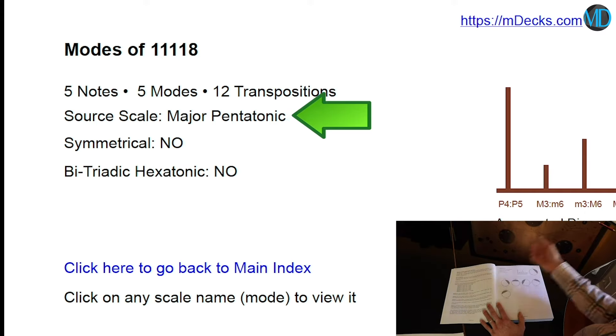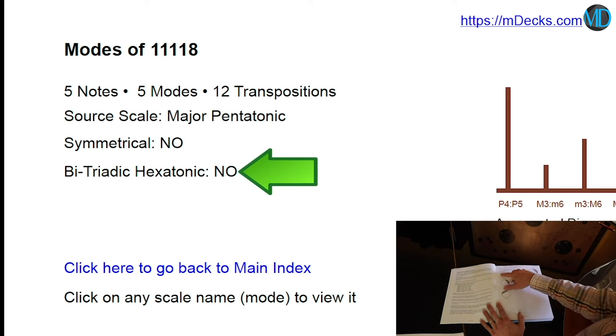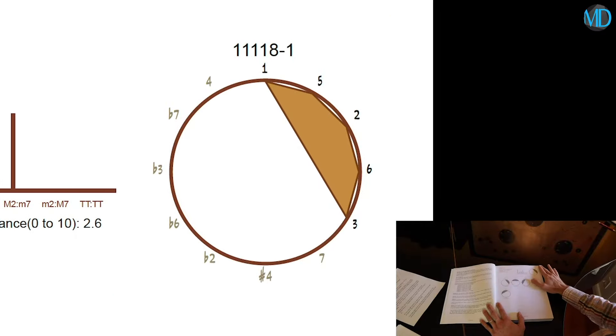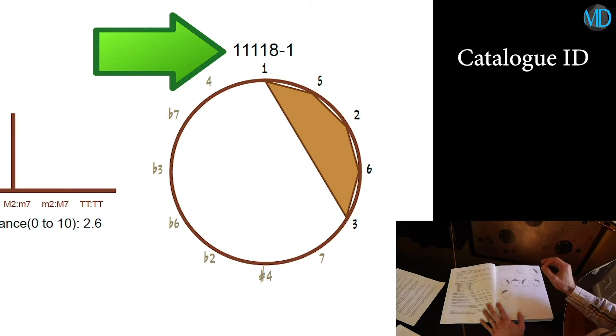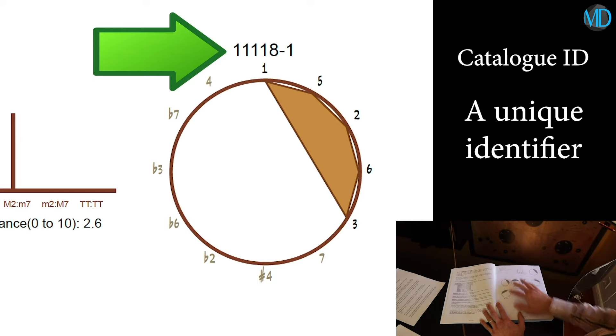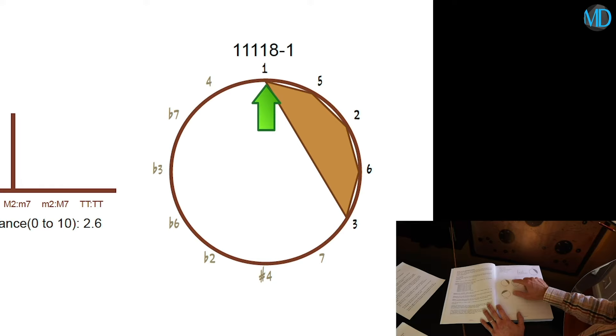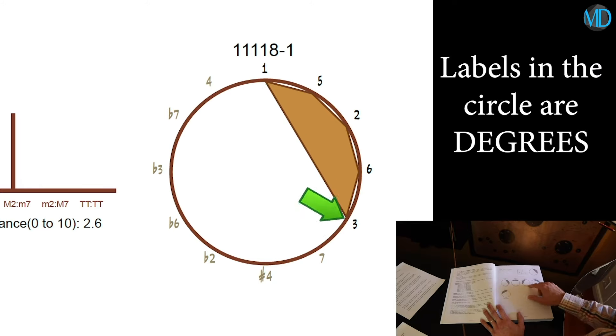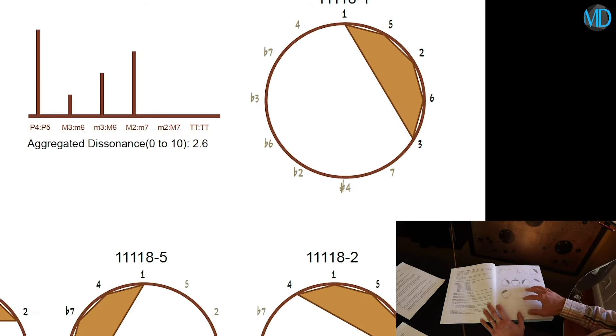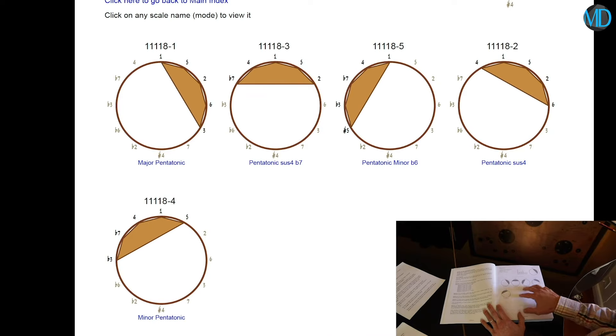The source scale, as we said before, is major pentatonic, and none of them are symmetrical, and there are no bi-triadic hexatonics either. The top right shows the source scale's graph over the circle of fifths, which includes the catalog ID for the set, which I'll explain later. Also notice that the circle of fifths are labeled using the degrees of the scale rather than the note names. This makes all the scales in this set root independent.